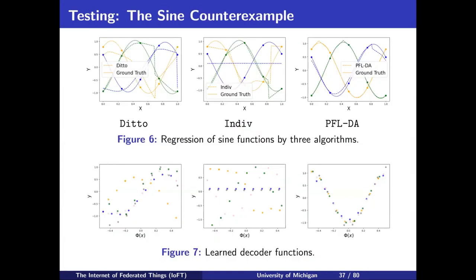Let me revisit the sine function example. With our model, from each sine function we just have five data points. If you do individual learning, you will learn nothing. If you do train-and-personalize, you get a very bad initial model. However, using our domain shift information, we can bring all the data into a domain-invariant space and then map them back.